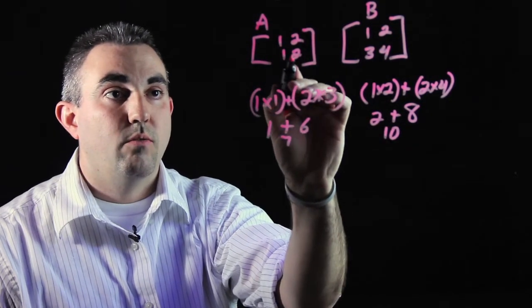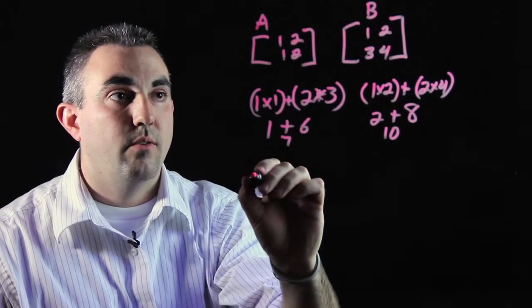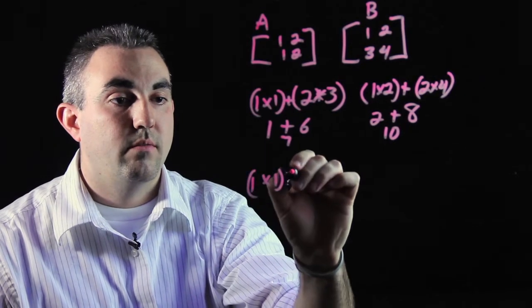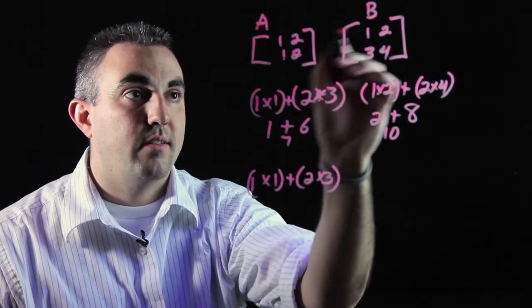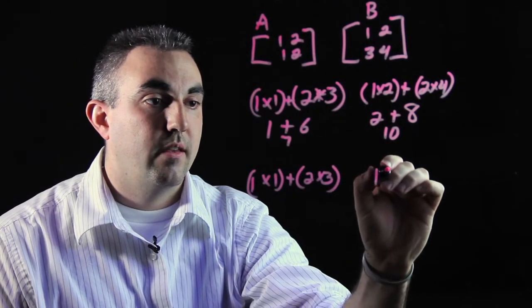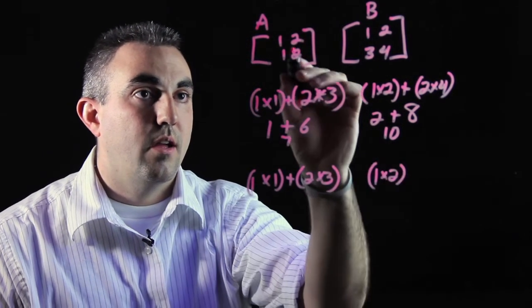Then you move to the second row, row 2, column 1. 1 times 1 plus 2 times 3, and 1 times 2, and 2 times 4.